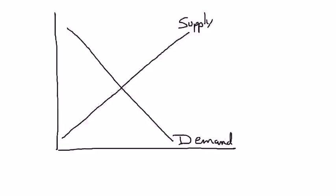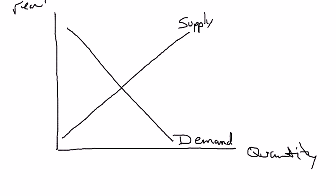Hi, everyone. Now that we've built up the supply curve and demand curve for loanable funds, I want to talk about equilibrium. Each of those curves had quantity of loanable funds on the horizontal axis, and the real interest rate on the vertical axis. So I can put the supply curve and the demand curve on exactly the same graph.